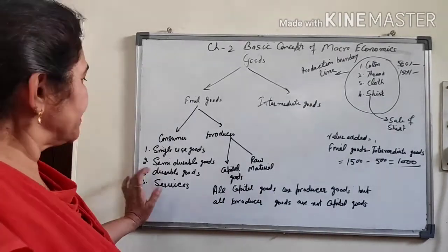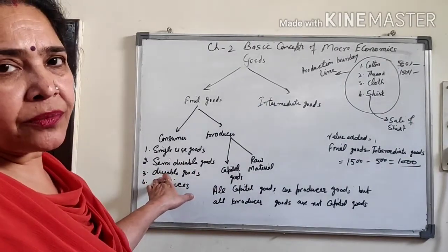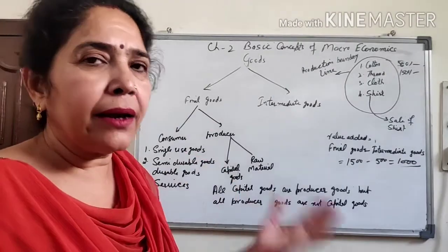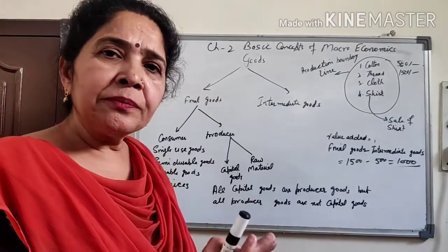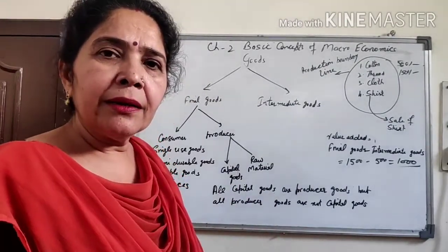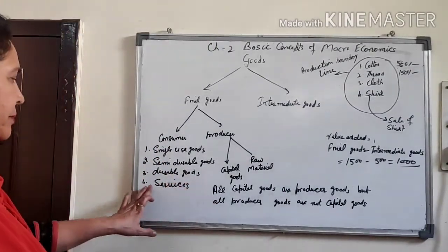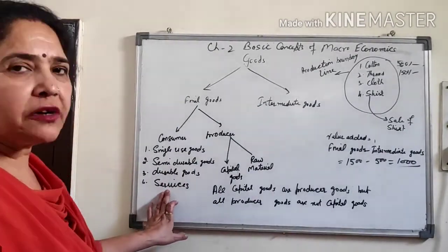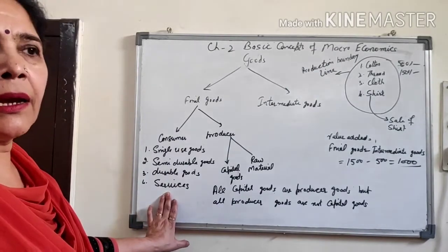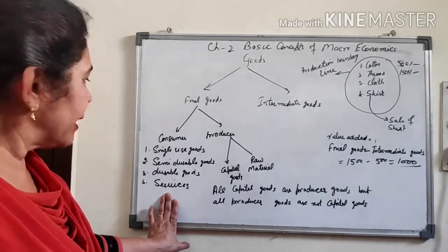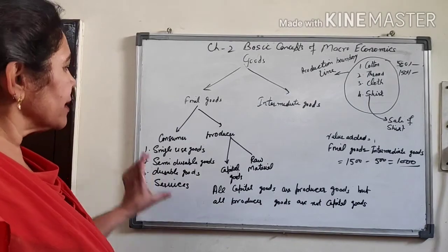Semi-durable goods do not have a fixed time limit. The third type is durable goods, which are used again and again — for example, a fan. Things used again and again are known as durable goods. The fourth type is services — professional services like teacher services, doctor services, and lawyer services which we use in our daily routine lives. These are known as consumer goods.